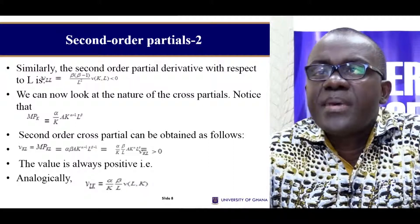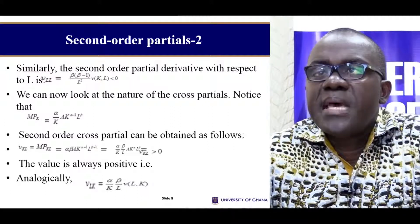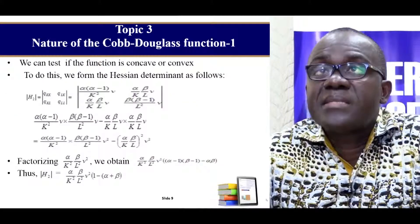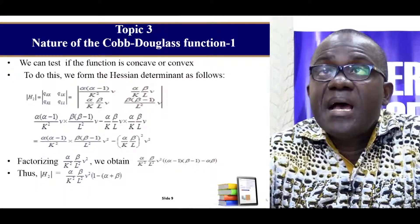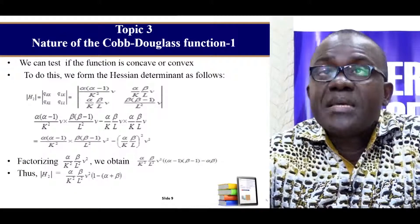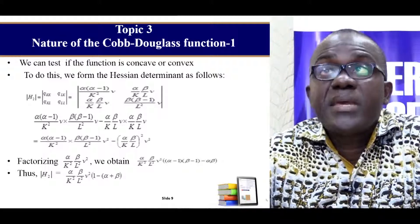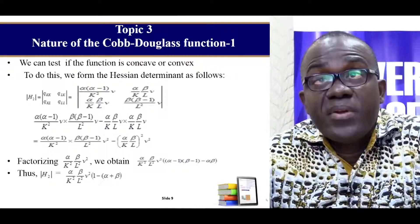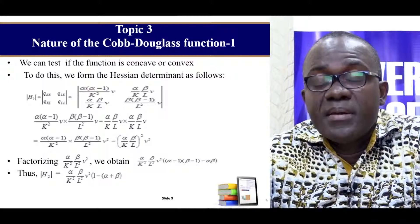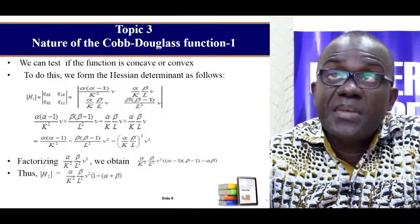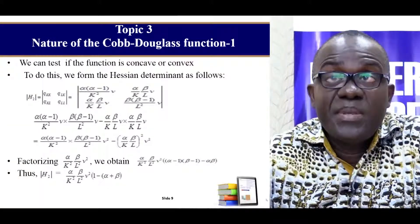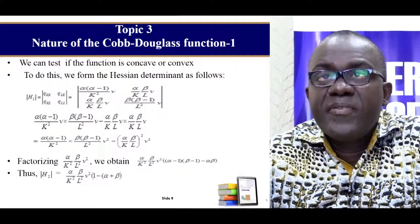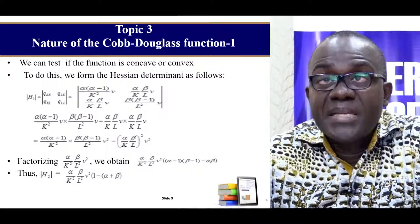Analogically you can do the same for the cross partials. Take your time and compute the cross partials — when you simplify and substitute the function in, you obtain the cross partial expression. Now, what is the nature of the Cobb-Douglas function — is it concave or convex? To determine this for a function of two variables, recall that we discussed concavity and convexity using the Hessian determinant, so here too we must use the Hessian determinant.